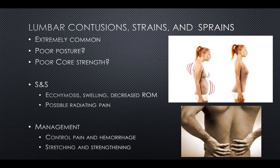Lumbar contusions, strains, and sprains are rare, but lumbar pain is very common. An estimated 75 to 80 percent of the population experiences low back pain resulting from mechanical injury to muscles, ligaments, and connective tissue, and approximately 30 percent of children suffer from low back pain. Poor posture — including excessive lumbar lordosis and weak abdominal muscles — is frequently associated with low back pain. Signs and symptoms include ecchymosis, swelling, decreased range of motion, and possible radiating pain into the lower extremities. Management includes controlling pain and hemorrhage, then stretching and strengthening of tissue.